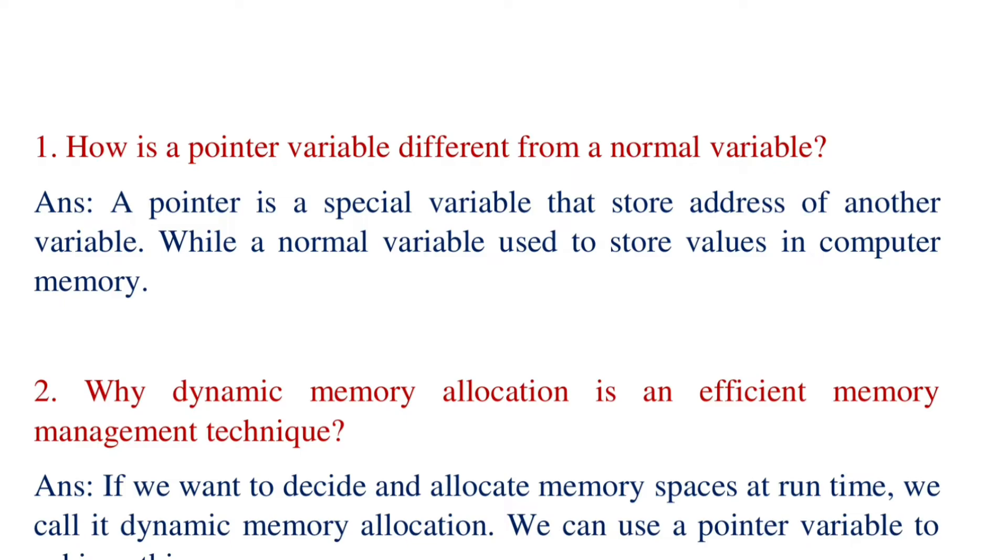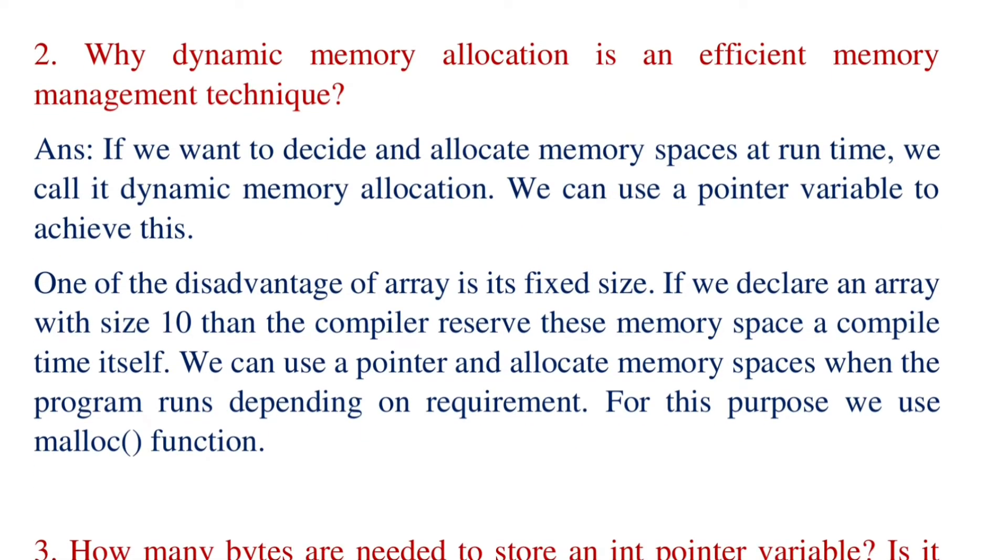Number 2: Why is dynamic memory allocation an efficient memory management technique? We have already learned in the previous chapter that array is fixed length. This is the demerit of array. If we declare an array with size 10 and just use two or three elements, the remaining space will still be occupied by computer memory during execution time. To overcome this problem, we can use array and malloc function to allocate the memory space when the program runs dynamically. By using this we can save storage.